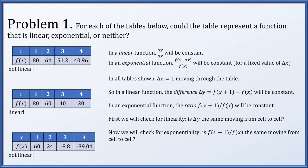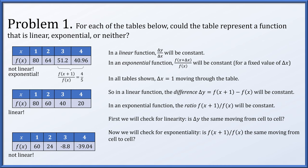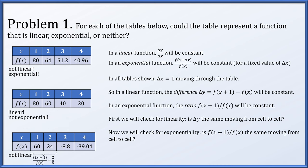Now to check for exponentiality, we compute the ratio f(x+1) divided by f(x) moving from cell to cell. In the first table, we get a ratio of 4/5, then 4/5 again, and 40.96 divided by 51.2 is exactly 4/5. So the ratio is constant — this is an exponential function. In the last table, 24 over 60 is 2/5, but the next ratio involves a negative number over a positive one, so this is not an exponential function.